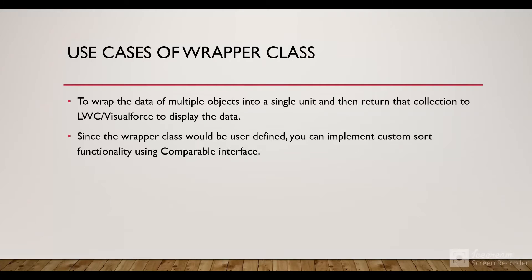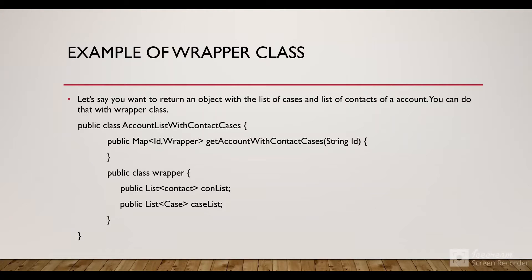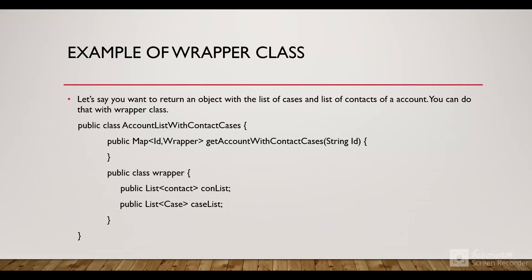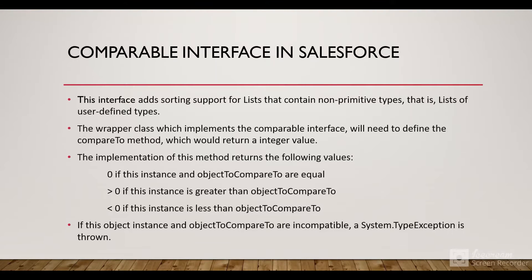The second use case is that since a wrapper class is user-defined, we can implement custom sort functionality using the Comparable interface. If our class implements the Comparable interface, Salesforce gives us the ability to implement a custom sort. We can override the compareTo method to define that sort functionality. The Comparable interface adds sorting support for lists that contain non-primitive types — that is, lists of user-defined types — and our wrapper class is an example of a user-defined type.